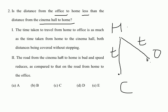Considering statement one alone: it says time taken is the same for home to office and home to cinema. The question asks whether the distance from office to home is less than the distance from cinema hall to home. If time taken is the same, you might assume distances are equal and think statement one alone is sufficient. However, it's wise to look at statement two as well. The time being equal does not mean the speed is equal — I might cycle to the office but drive to the cinema.